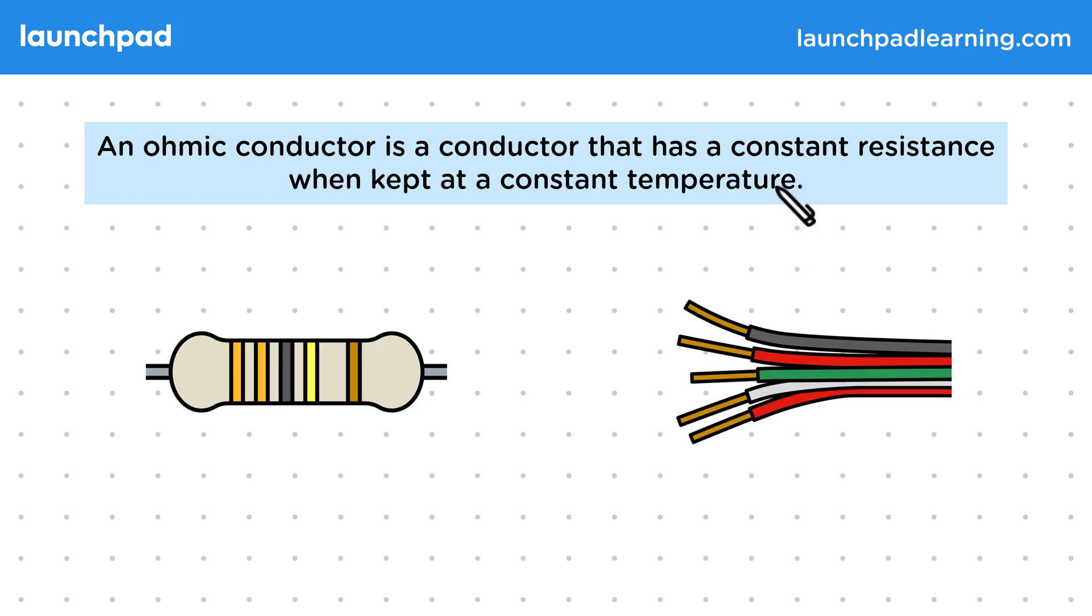So what are some examples of ohmic conductors? Well, fixed resistors are resistors designed to have a constant resistance value. We can then use these to plan out how currents and potential differences are distributed around a circuit. Then wires are also a type of ohmic conductor, as they have a small amount of resistance that won't change if the wires don't heat up.